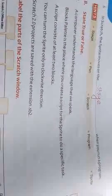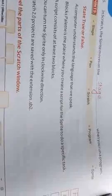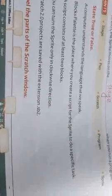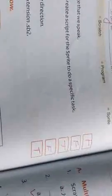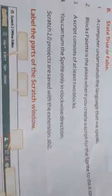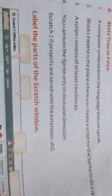Now true or false. A computer understands the language that we speak — that is false. A block palette is the place where you create the script for the script to do specific tasks — that is false. A script consists of at least two blocks — that is true. And you can turn the sprite only in the clockwise direction — that is false.